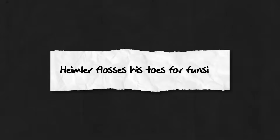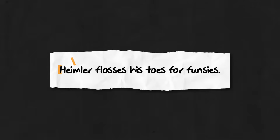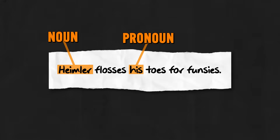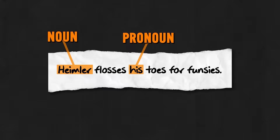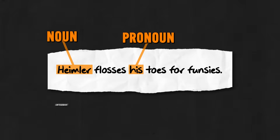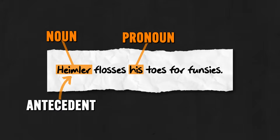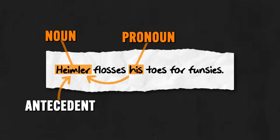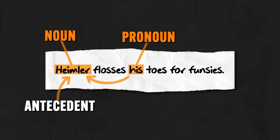Let me remind you with an example. Heimler flosses his toes for funsies. So Heimler is the noun and his is the pronoun. In this example, Heimler would be the antecedent of the pronoun — because it comes before the pronoun. Same idea with antecedent boundaries.